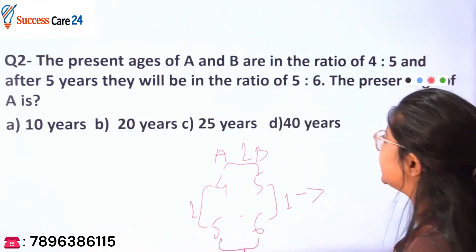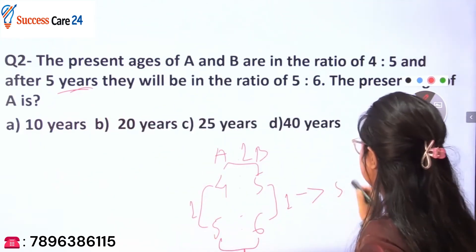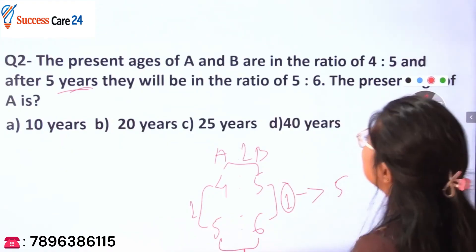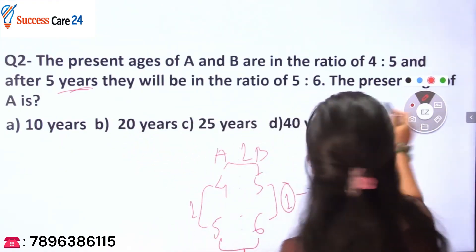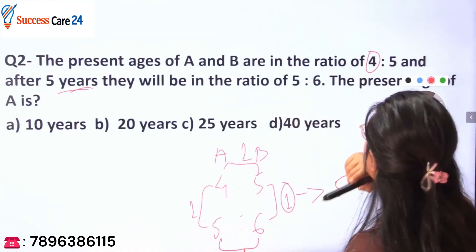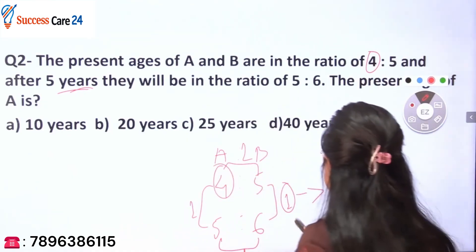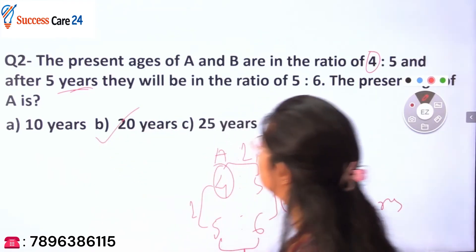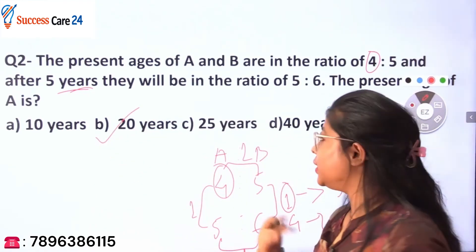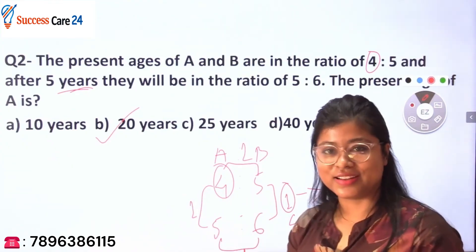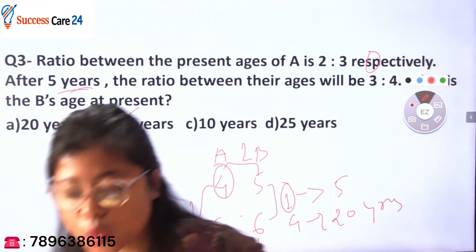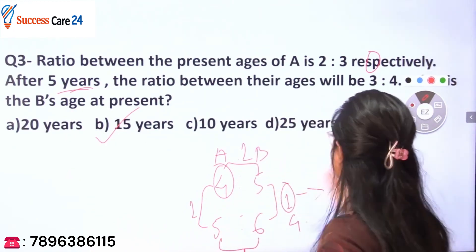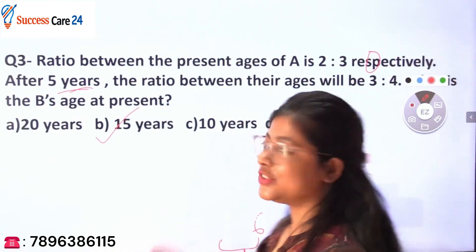Equate this difference of 1 to the 5 years given, so 1 ratio = 5 years. You are asked to find the present age of A, whose ratio is 4. So four ratios = 4 × 5 = 20 years. That is the required answer. I have also given a homework problem — please answer it in the comment box. That's all for today, thank you!